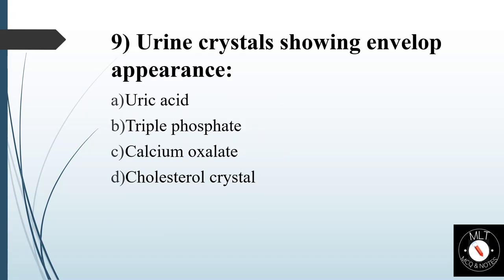Ninth question. Urine crystals showing envelope appearance. Option A: Uric acid. Option B: Triple phosphate. Option C: Calcium oxalate. Option D: Cholesterol crystal. Answer is Option C: Calcium oxalate.